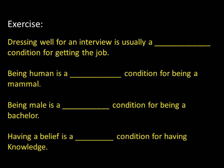In the exercise: dressing well for an interview is usually a necessary condition for getting a job — you typically have to dress well, but you also have to answer questions well. Being human is a sufficient condition for being a mammal — that's all you need, though you can be a mammal in other ways too. Being male is a necessary condition for being a bachelor — by definition a bachelor is an unmarried male — but it's not sufficient because you also need to be unmarried.